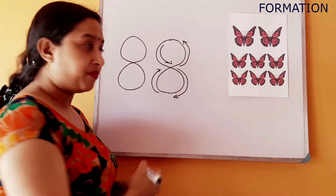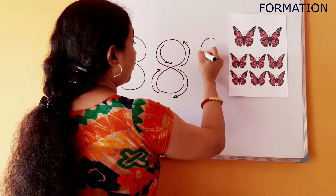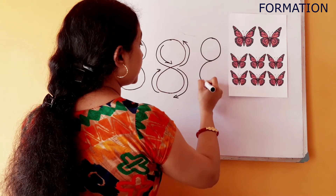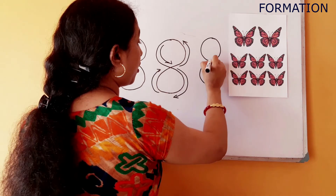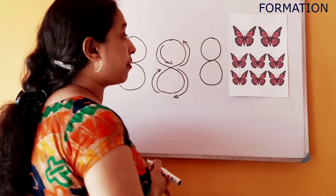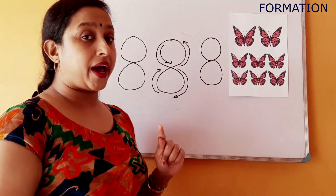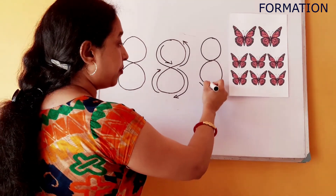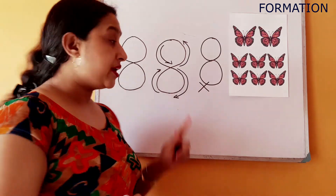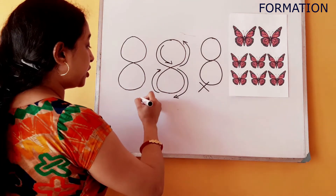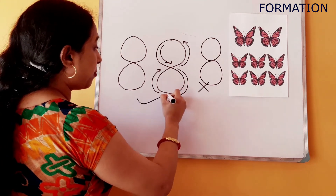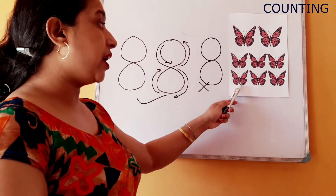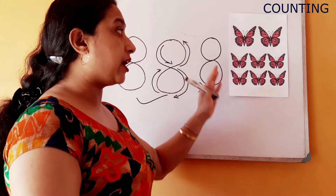Got it, children? Do look very carefully — this is the wrong formation of number eight. We should not write number eight in this way. This is the correct formation of number eight.